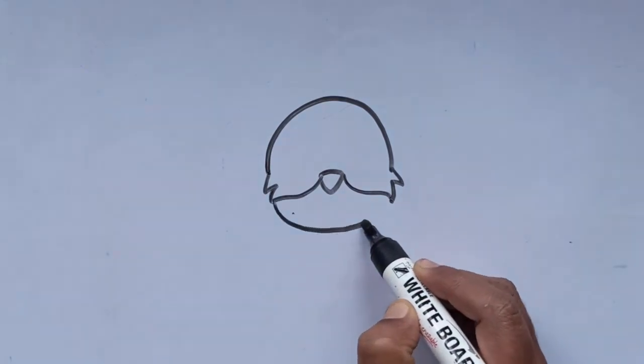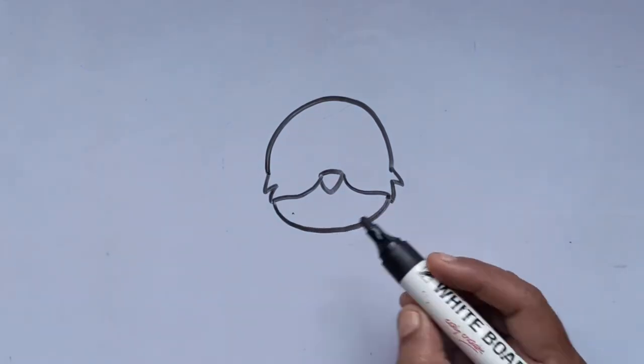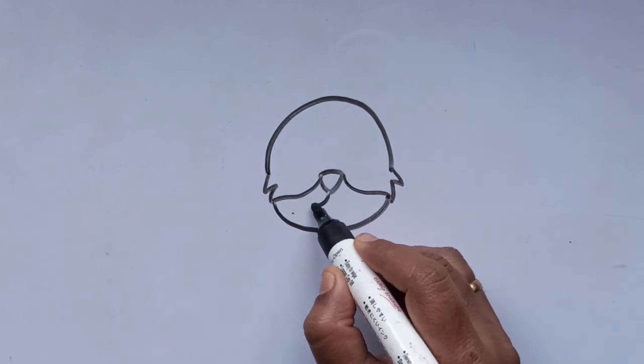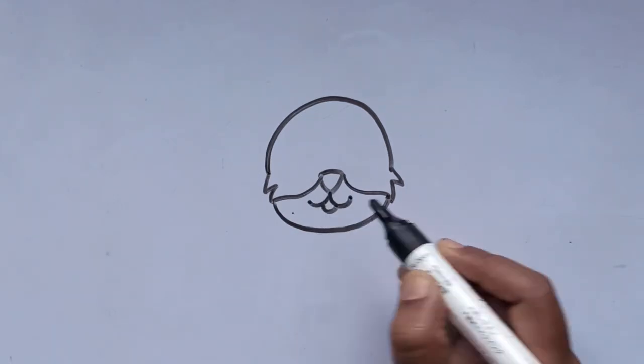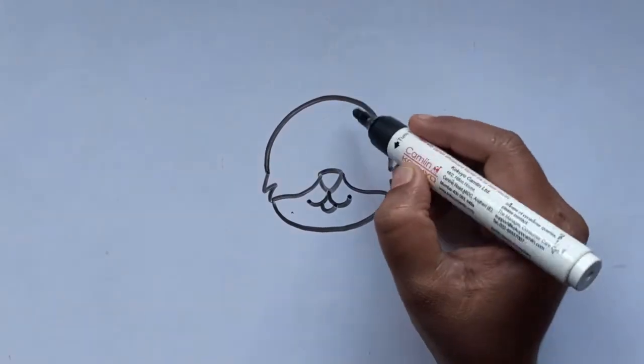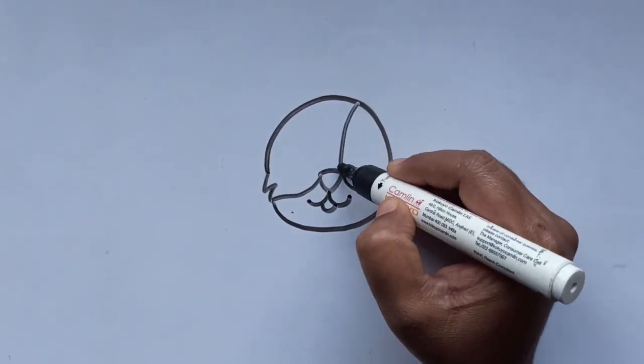Let's make a nice curved line here. Add a cute little smile and mouth. Now draw two lines till the nose.